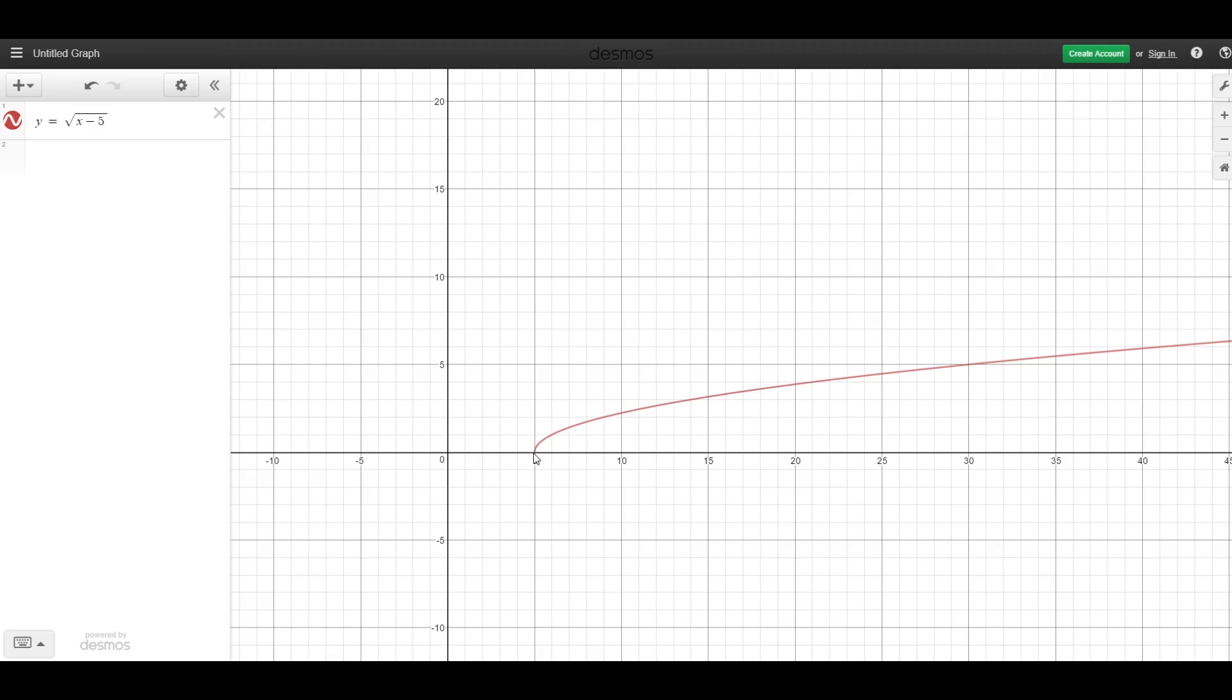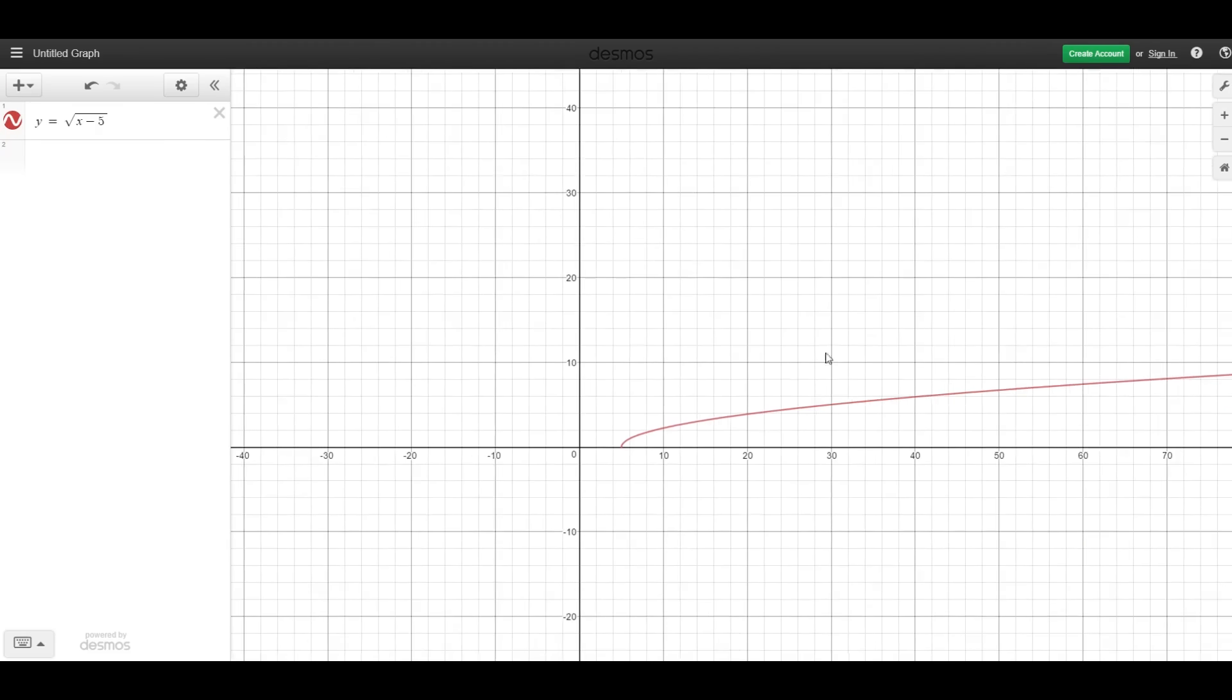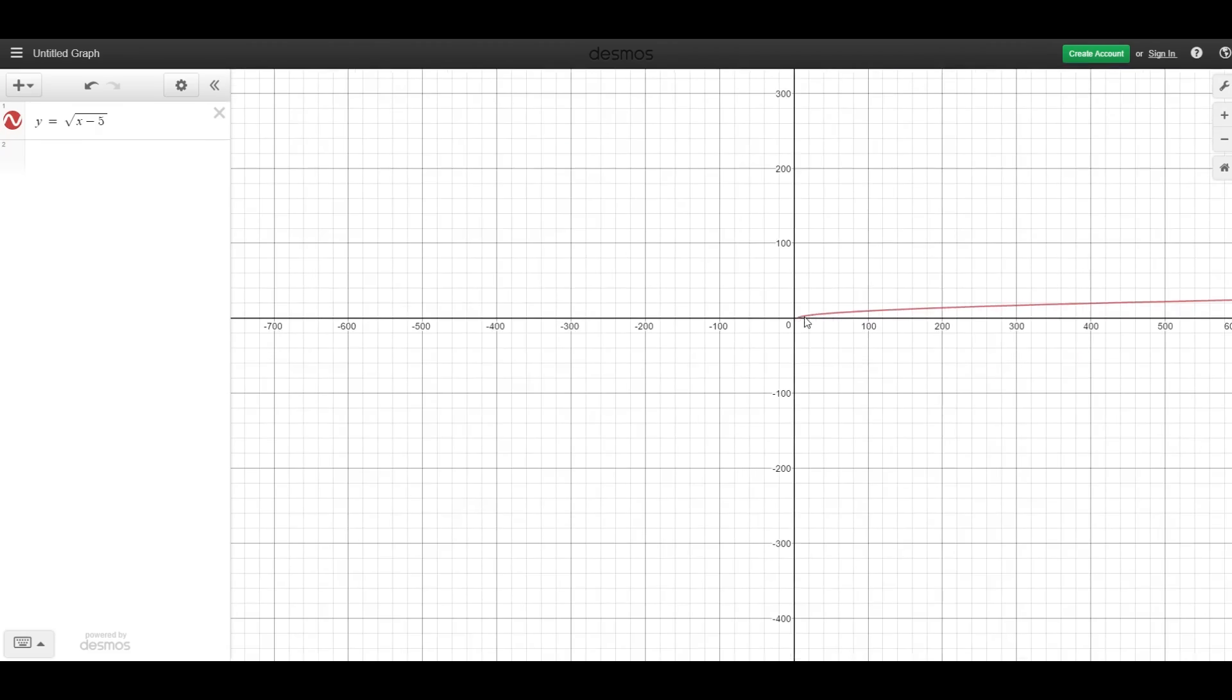Looking at the y values, we can't achieve a number less than 0. If we keep zooming out, we see that the graph never goes below 0, so we can't get any negative y values, and we can't get any x values less than 5.